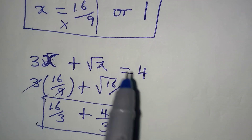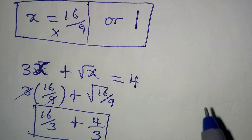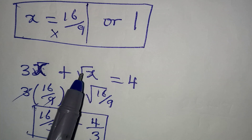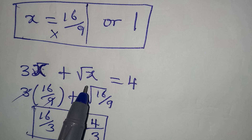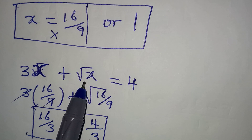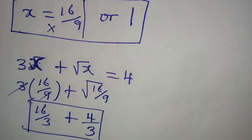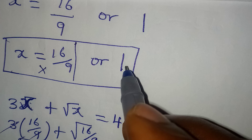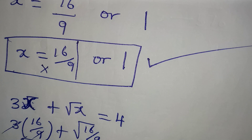But if we put in x equal to 1: 3 times 1 gives 3, and square root of 1 is 1. So 3 plus 1 equals 4. The value x equal to 1 satisfies the equation. Thank you for watching.